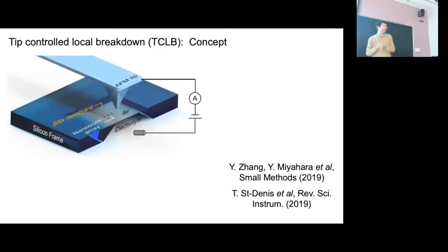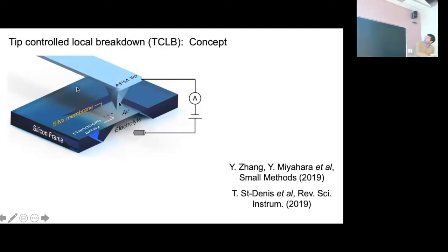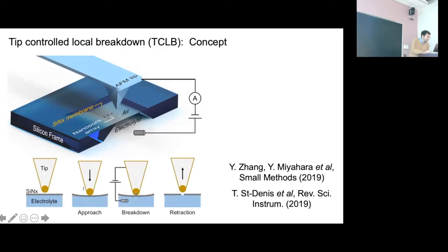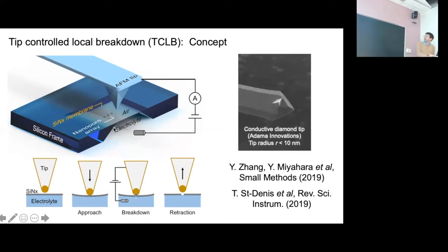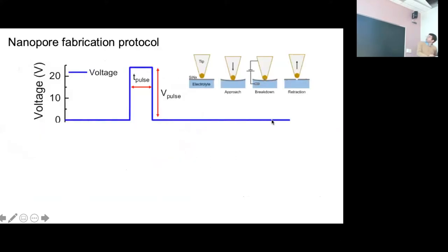For that reason, in collaboration with Peter Grutter, we developed a new way of applying breakdown using a conductive AFM tip. We bring the tip down onto a membrane, apply about one nanonewton of force to get good electrical contact, then apply a voltage locally at the tip and create a pore at that position due to local breakdown. We retract the tip and can then make another pore. The real driving thing that makes this technology work well is using very special conductive diamond tips.